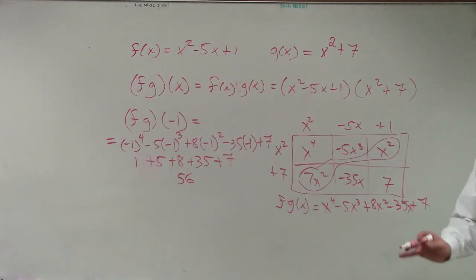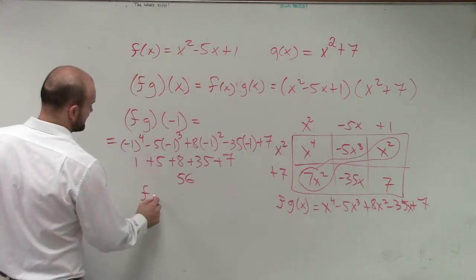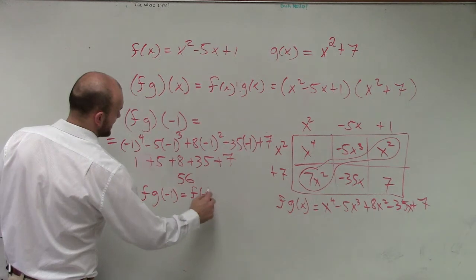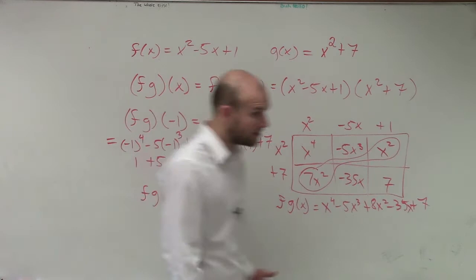All right. Do it all that way. However, the other way to do this is you guys can simply say f times g of negative 1 equals f of negative 1 times g of negative 1. Right?